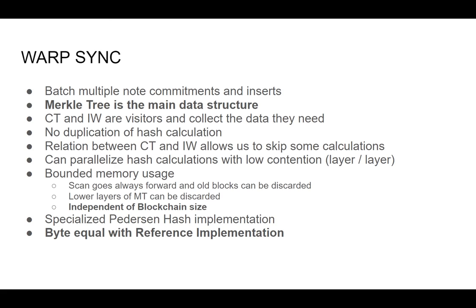By having the same serialization, we can directly inject this into the rest of librustzcash. For example, if we need to produce the ZK proof, the ZK proof doesn't take the incremental witness directly — it takes the Merkle path, which is calculated from the IW. Our implementation stores the IW as a byte stream in the database, and we ask the reference implementation inside librustzcash to deserialize the same bytes and compute the Merkle path. That's part of how the code stays small — warp sync is around 300 to 400 lines of code.